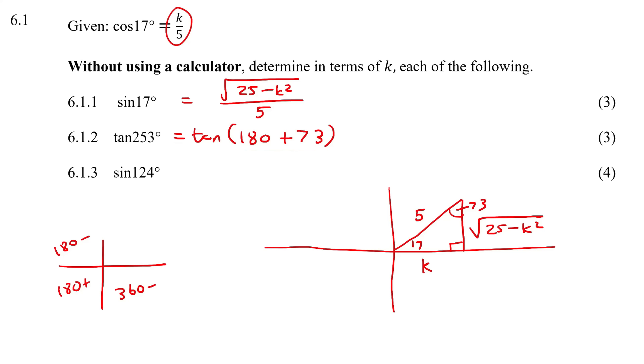We're going to say that tan of 253° is the same as writing tan of 180 plus 73, because that still gives you 253. What happens now is that we can write it as tan 73°, and we know that tan is also positive in this quadrant. Now remember, tan is opposite over adjacent, so opposite of the 73 is k and the adjacent is square root of 25 minus k².